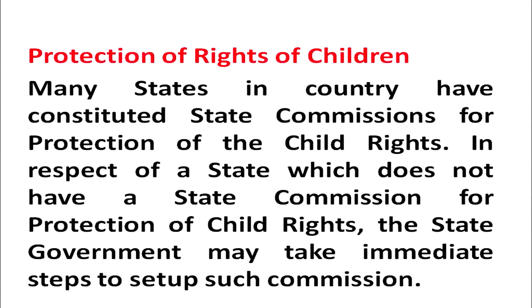The cumulative record is a record of the child from the beginning to date. It includes what was the position of the child academically, socially, emotionally, and psychologically when admitted, and what the position of the child is right now. On the basis of this cumulative record, things can be predicted about the child.